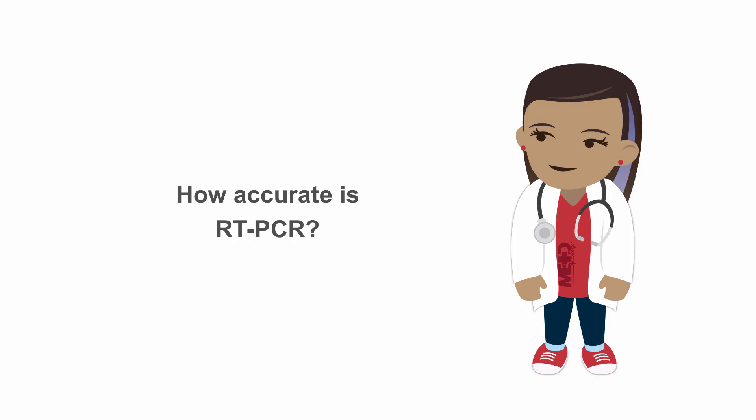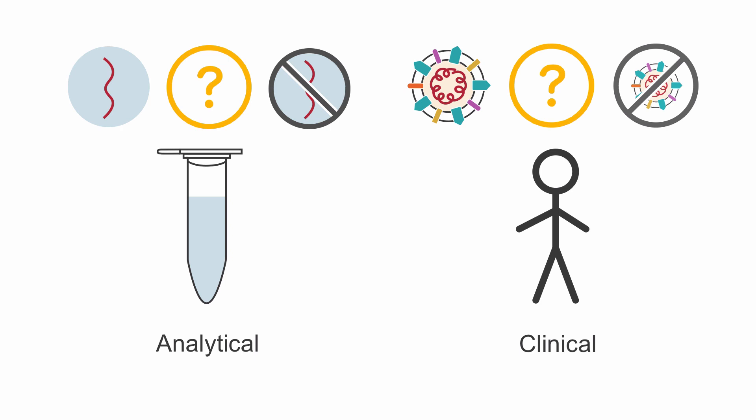Obtaining quick results is great, but it's just as important that these results can accurately identify people with the disease so they can be isolated to reduce transmission. So what's the accuracy of RT-PCR testing? To answer that question, we need to consider both the analytical specificity and sensitivity, that is the ability of the RT-PCR assay itself to detect the viral RNA when it's present in the sample, as well as the clinical sensitivity and specificity, which tells us how well the test detects individuals who have or don't have the disease.